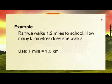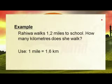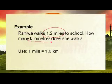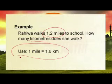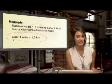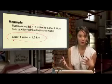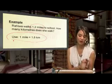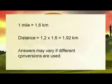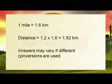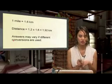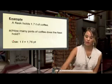Our first question is the simple one — just multiplying. It goes like this: Rahiwa walks 1.2 miles to school, how many kilometres does she walk? They're giving us the distance in miles, telling us she walks 1.2 miles, and asking how many kilometres that equates to. They give us the mile to kilometres ratio: one mile is equal to 1.6 kilometres, which you will be given in a test. You simply multiply them — 1.2 times 1.6 — and that gives us 1.92 kilometres. Answers may vary if different conversions are used.